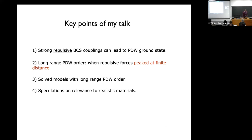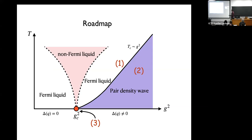We've solved models with long-range order, and I'm going to speculate on the relevance to reality. The phase diagram shows: a Fermi liquid, a quantum critical point, and a long-range pair density wave order. There are three regimes. In regime one, near the finite-temperature transition, we solve for the static propagators as a function of temperature and momentum and the linearized gap equations. In regime two, going into the ordered phase, we use static propagators and integrate out the fermions for a Ginzburg-Landau-like bosonic theory, including non-linearities as the order parameter develops below Tc. In the quantum critical region, we cannot integrate out the fermions and must keep both, solving for self-consistent dynamical propagators.